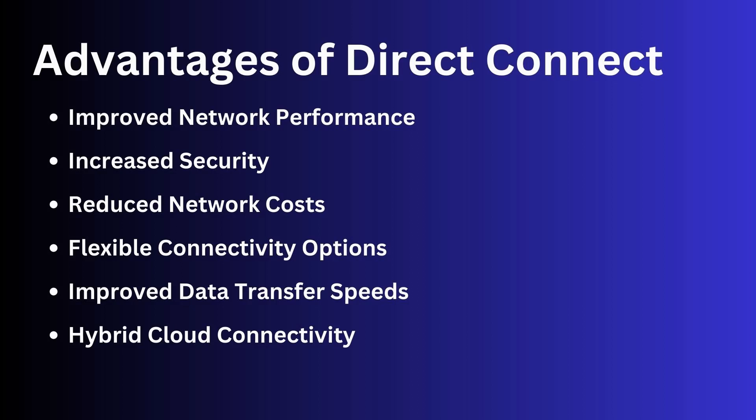Increased security: with Direct Connect, you can bypass the public internet and establish a private dedicated connection to AWS, helping improve security and compliance by keeping your data within your private network. Reduced network costs: Direct Connect can help reduce network costs by eliminating the need for expensive VPN or dedicated circuits to connect your on-premises infrastructure to AWS.